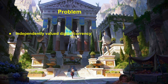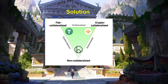One of the problems we have today is that we still don't have an independently valued digital currency in crypto. The solution we came up with is the stablecoin, and there are three categories each fit into. We have fiat-collateralized stablecoins such as Tether, crypto-collateralized stablecoins like DAI which are backed by crypto assets like ETH, and algorithmic stablecoins which are non-collateralized like Basis Cash or Ampleforth.